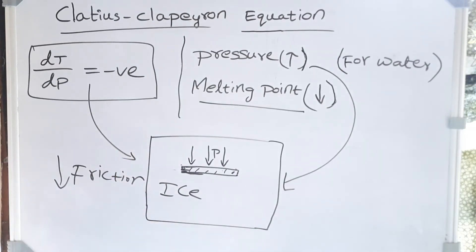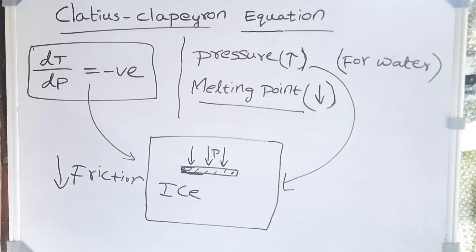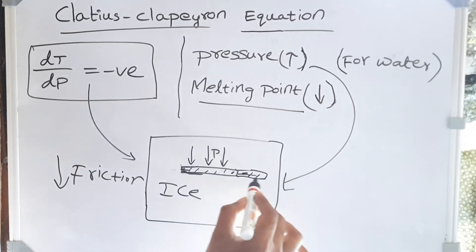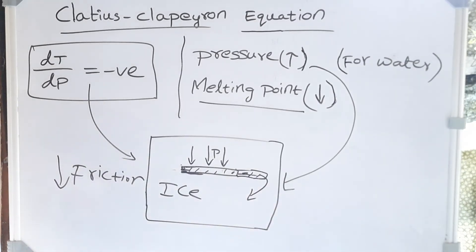So this small layer of ice melts, which decreases the friction and which makes it easier. Because there is no friction, the person can move more easily. So whenever the person is moving, the contact area gradually goes like this and this area, the small layer of ice melts, and which facilitates the skating of the person.